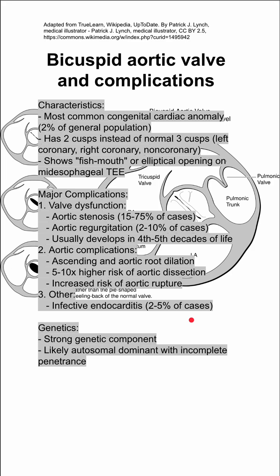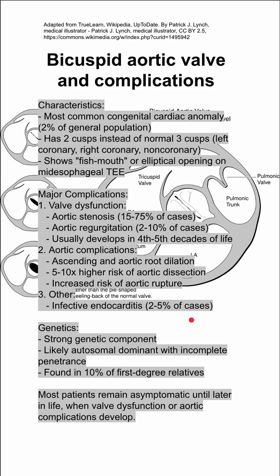There's a strong genetic component. It's likely autosomal dominant with incomplete penetrance, and it's found in 10 percent of first-degree relatives.